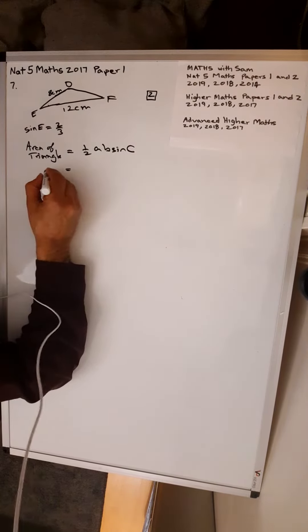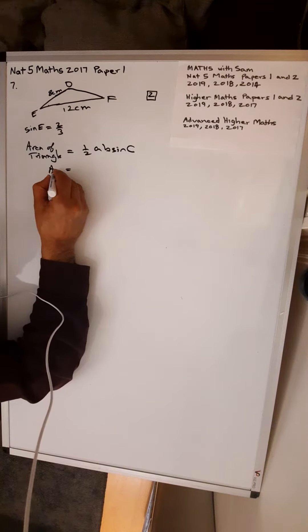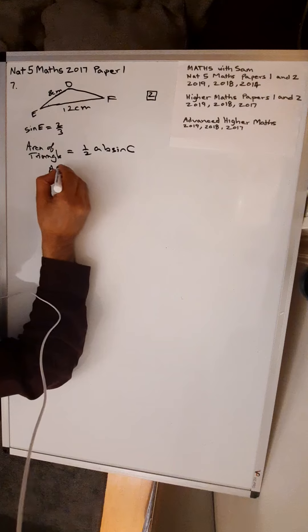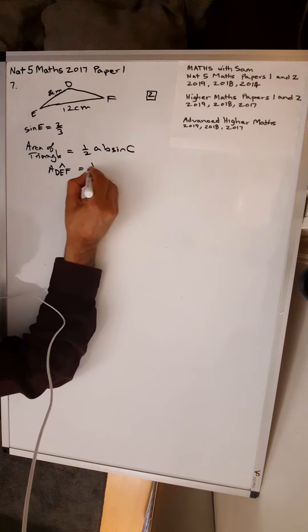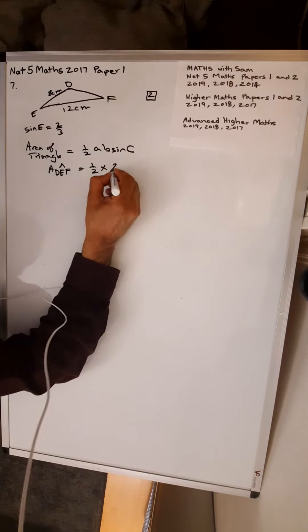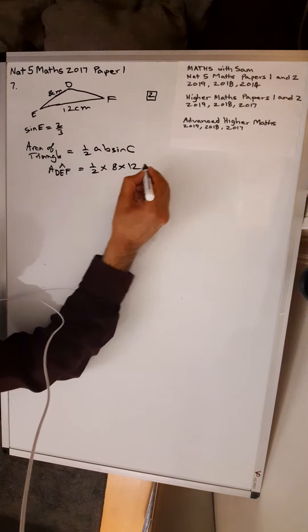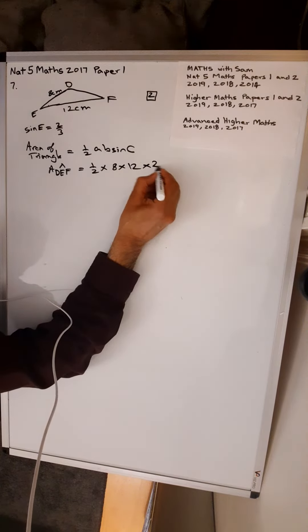So that would be, area of triangle DEF is equal to half times 8 times 12 times 2 over 3.